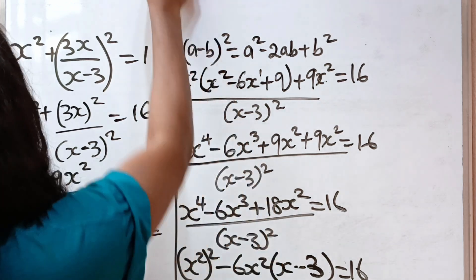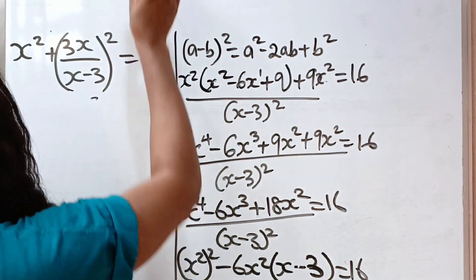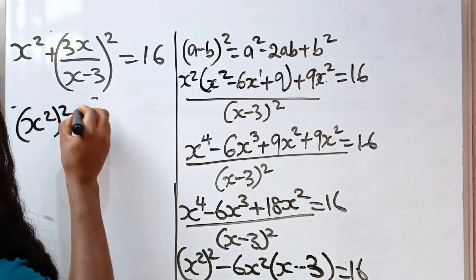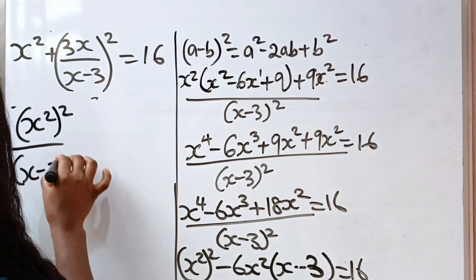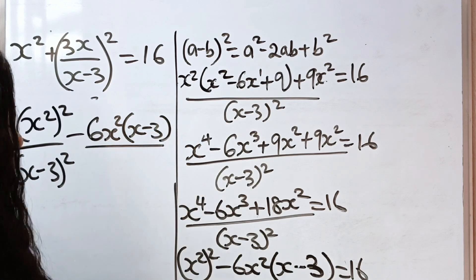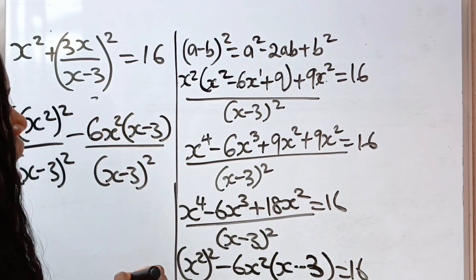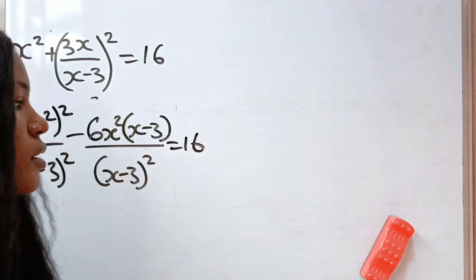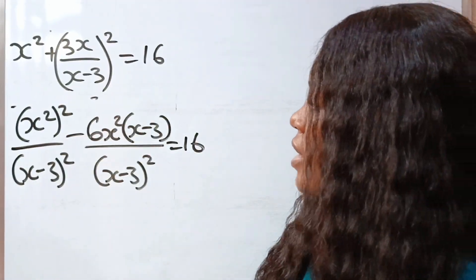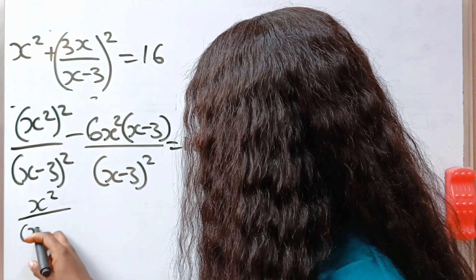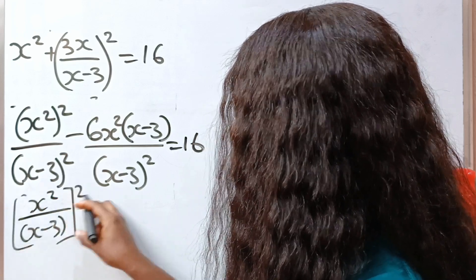Let us distribute this denominator. We get x squared over x minus 3, all raised to the power of 2, minus 6x squared times x minus 3 divided by x minus 3 squared, equal to 16. We notice that x minus 3 can divide x minus 3 squared to leave x minus 3 once, so on the second term we have 6x squared divided by x minus 3. Equal to 16.